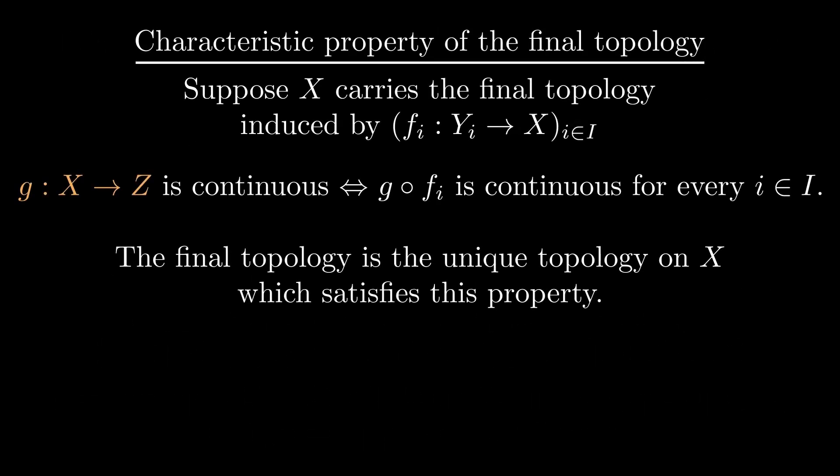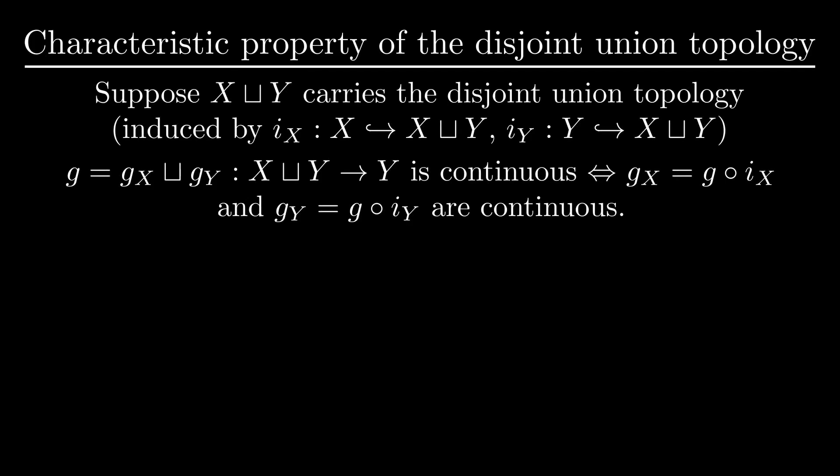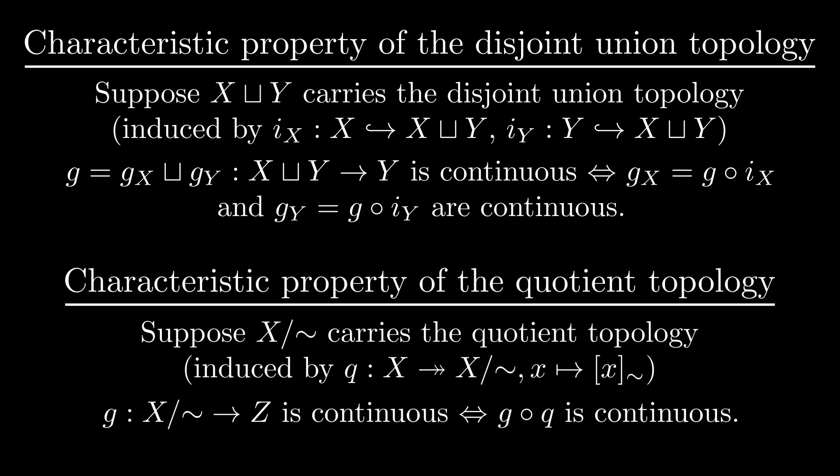For the quotient topology, we also have a characteristic property. A map from a space with a final topology is continuous if and only if the composition with the functions which induce the final topology are continuous. For the disjoint union, this means that a map on the disjoint union is continuous if and only if it's continuous on both components. For the quotient topology, a map is continuous if and only if the composition with the quotient map is continuous.